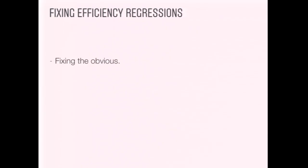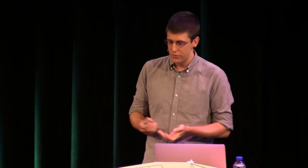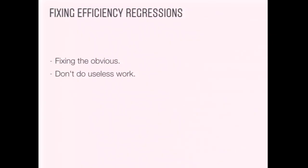So what do we do when we find an efficiency regression? Many cases are simply silly things that should be fixed — an O(n³) algorithm, or concatenating strings in a tight loop. A close relative is simply not doing useless work. Recently we fixed a case where we were fetching a set of media and fetching all of the comments on every one, in a view that didn't actually show the comments at all. These two categories account for the vast majority of our performance regressions.